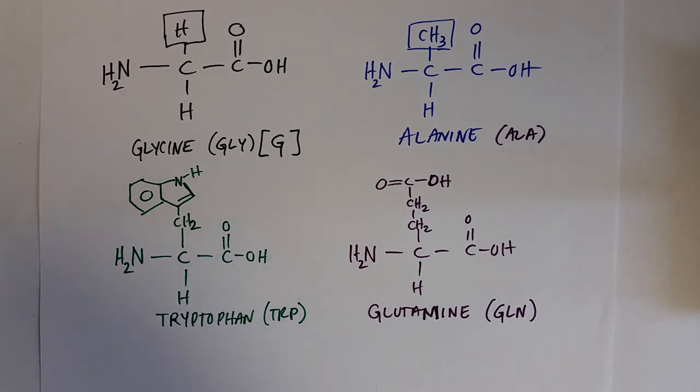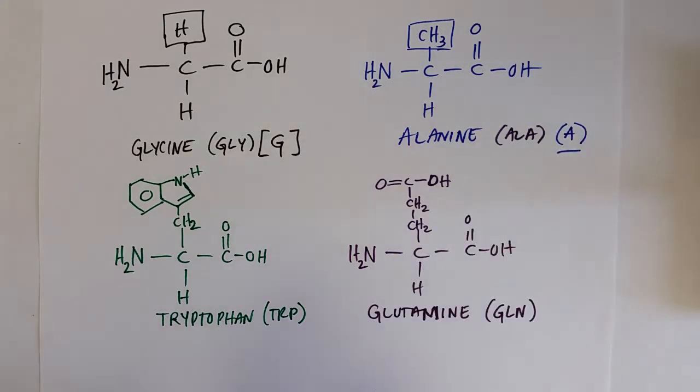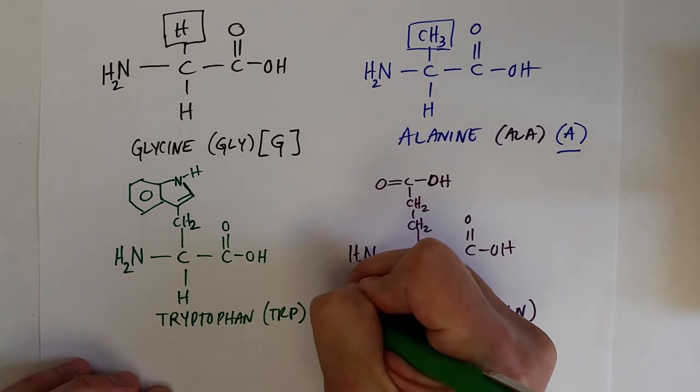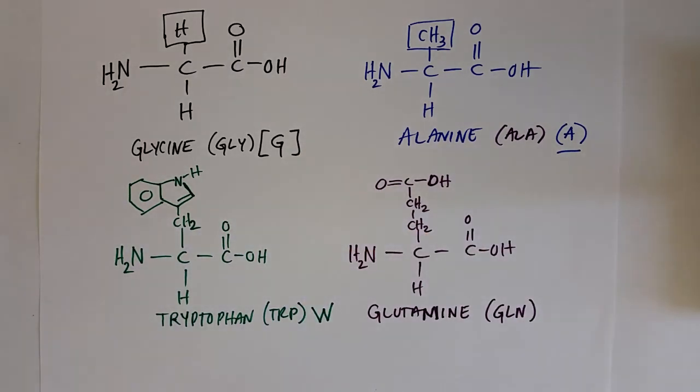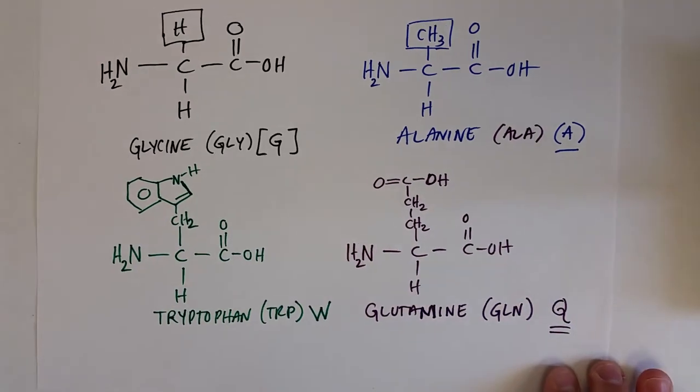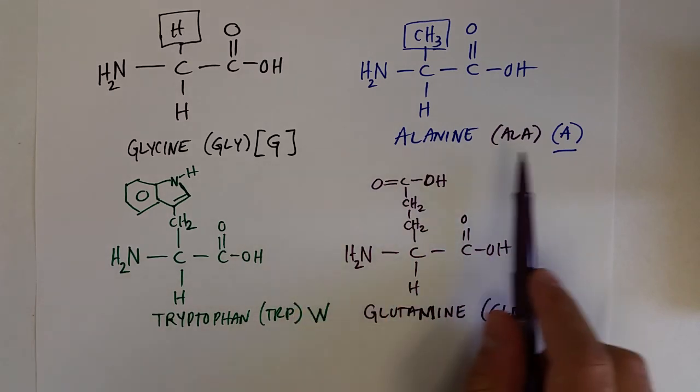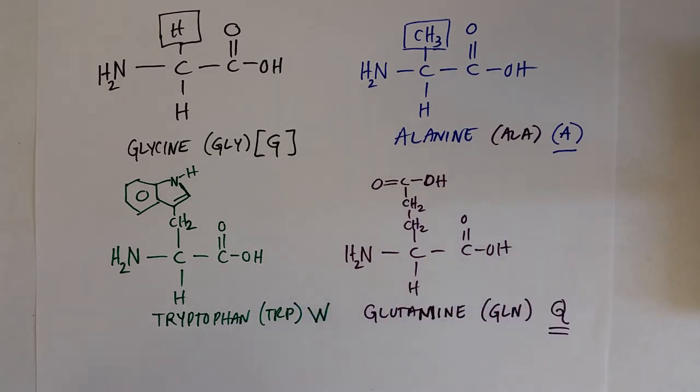Alanine's is A. Tryptophan's is W. And glutamine's is Q. And so when you list proteins with very long amino acid chains, you often just list them as their one letter abbreviation. And that way you can quickly list all of them. And then if you need to, you can figure out what each one of those is.